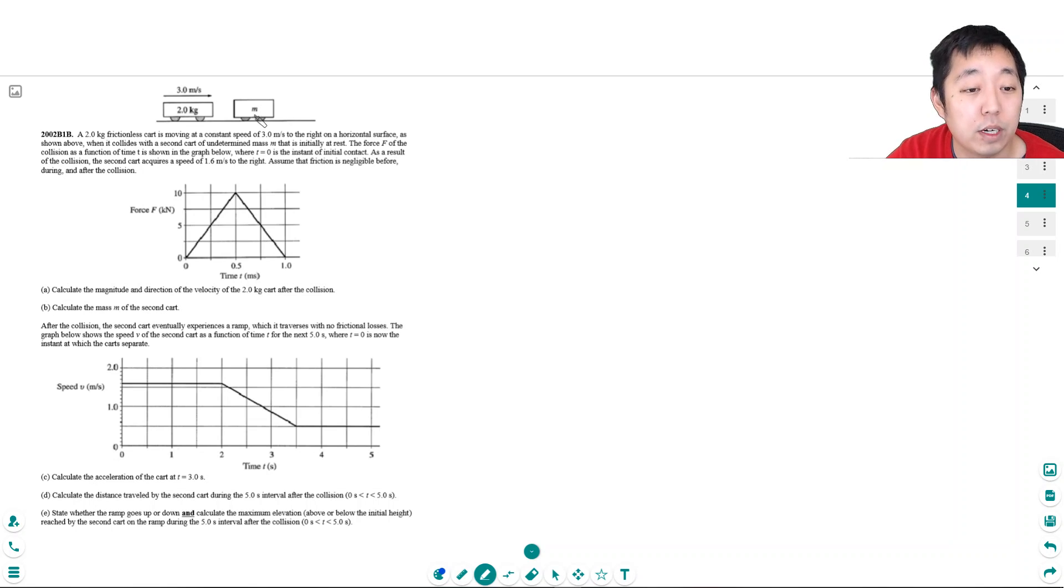Assume that friction is negligible before, during, and after the collision. Calculate the magnitude and direction of the velocity of the two kilogram cart after the collision. So initially this is a momentum kind of question. I believe there's a couple ways to do this. I don't know the mass of this cart, so that is unfortunate.